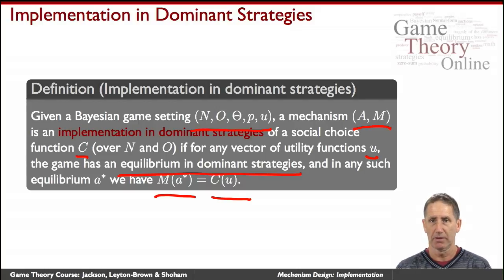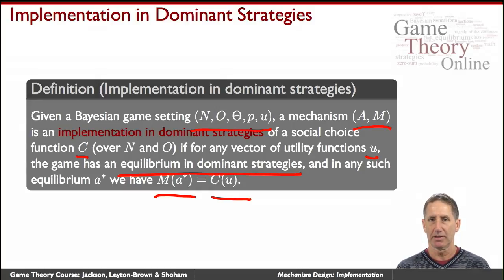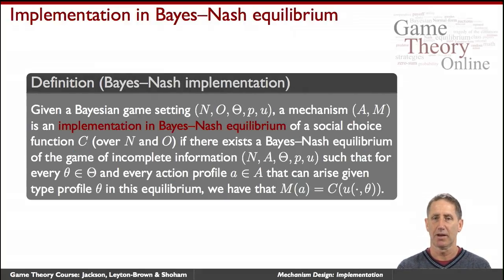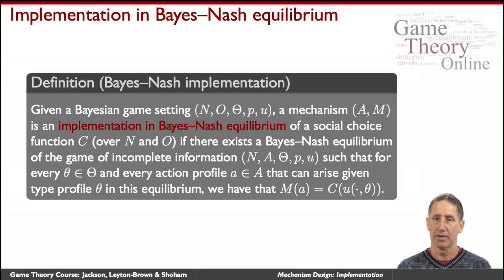You could ask several questions: why must it hold in all equilibria — maybe one is enough? And why only dominant strategies? In fact, it doesn't have to be. A more general, more relaxed definition of implementation is implementation in a Bayesian-Nash equilibrium.